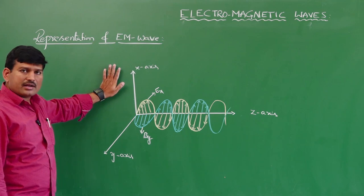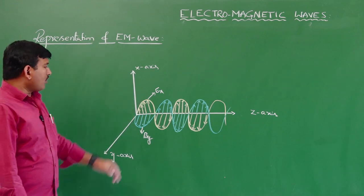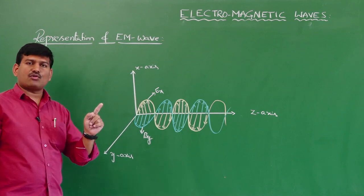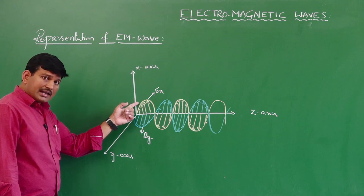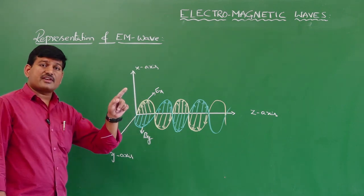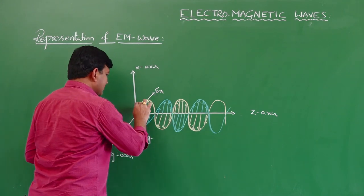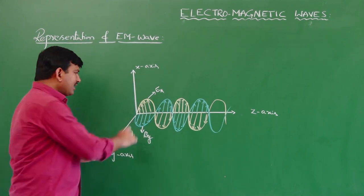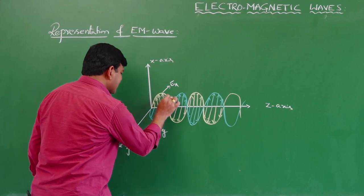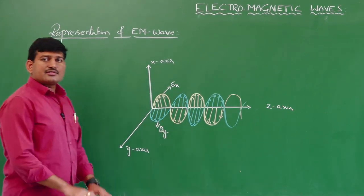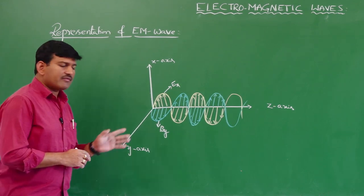An important question: what is the phase difference between the electrical wave and the magnetic wave in an electromagnetic wave? Most of us may think that since the electrical vector and magnetic vector are perpendicular to each other, the phase difference between them is 90°. But that is the wrong answer. By the time the electrical wave completes one oscillation, the magnetic wave also completes one oscillation — they always complete the same in the same time period. Therefore, they are always in phase.